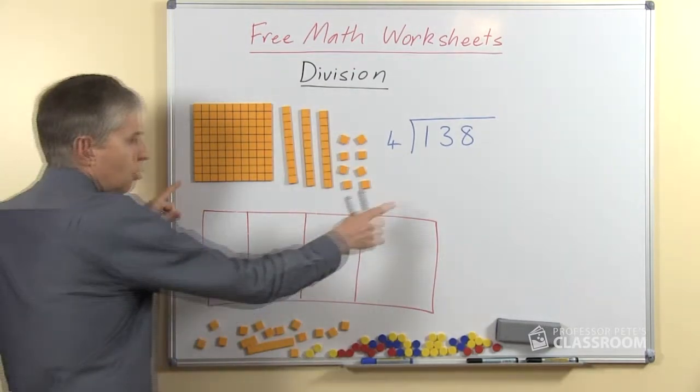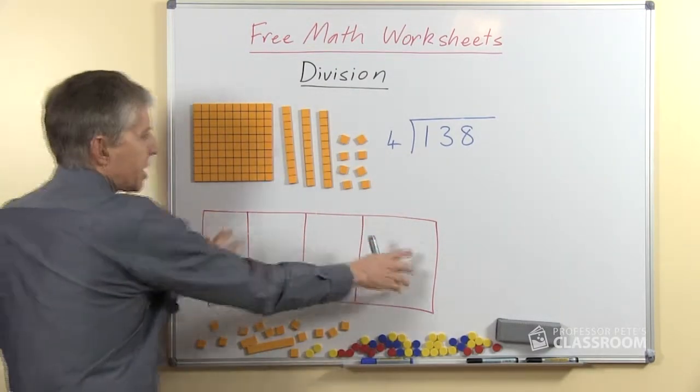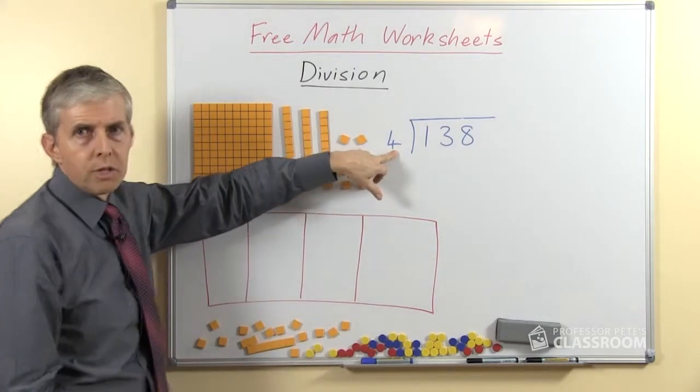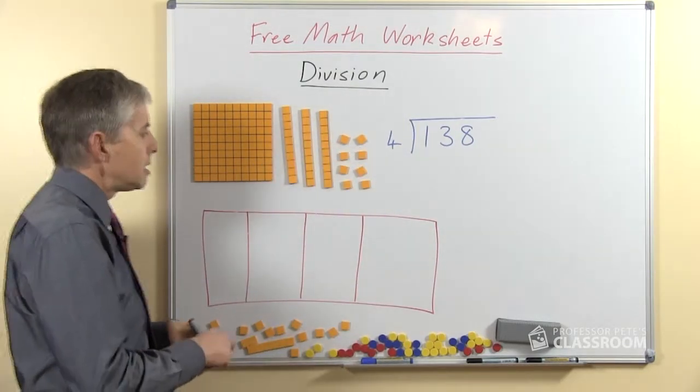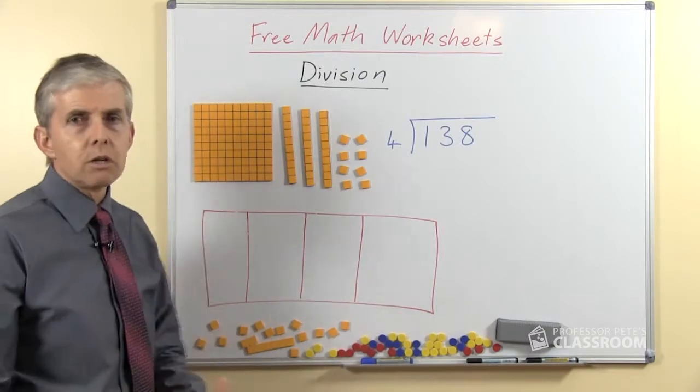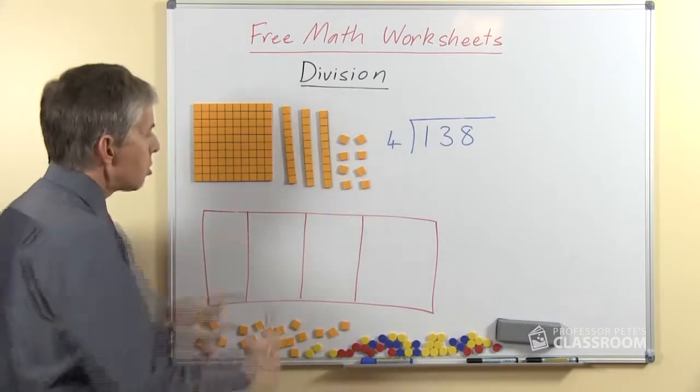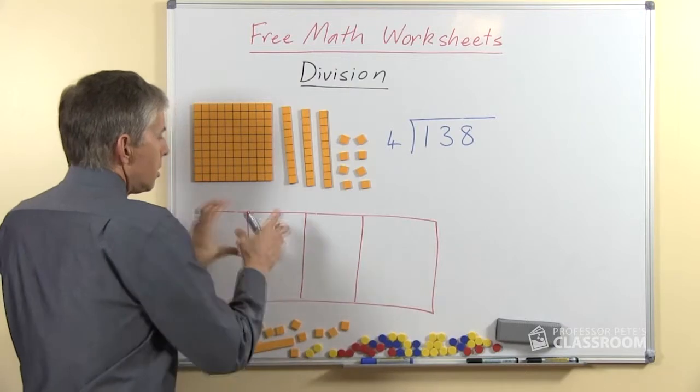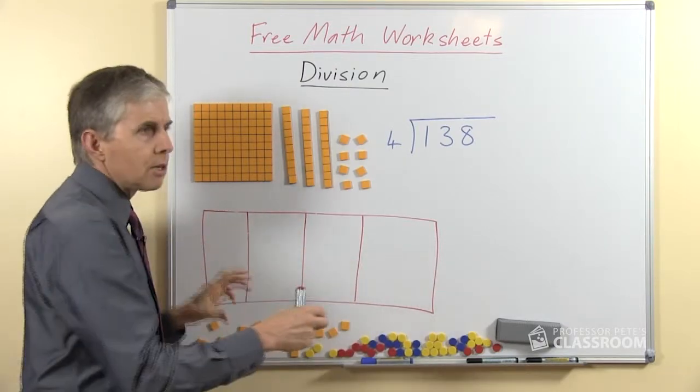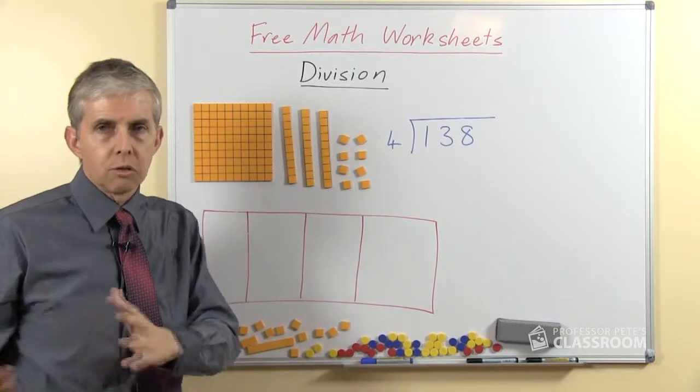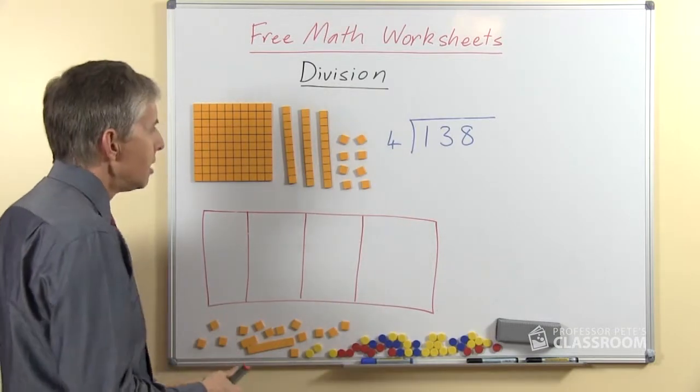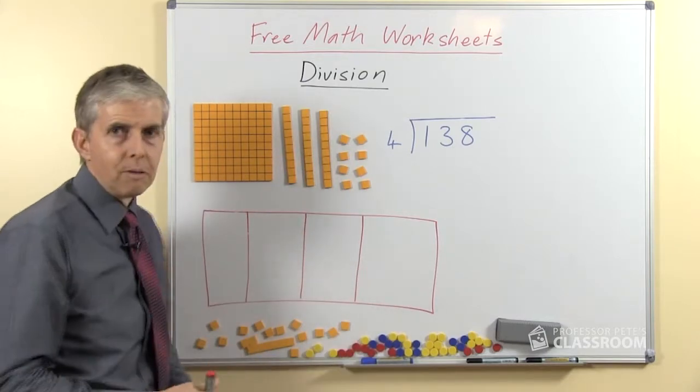Now you'll notice here I've drawn up a frame with four sections. This represents the four that we're dividing by. The model that we're using is division by partition or sharing, so we know there are four parts to the answer, we just don't know how many go in the four parts. The other sort of course is quotation and we would do that differently, but this is the way to do it with the base-10 material.